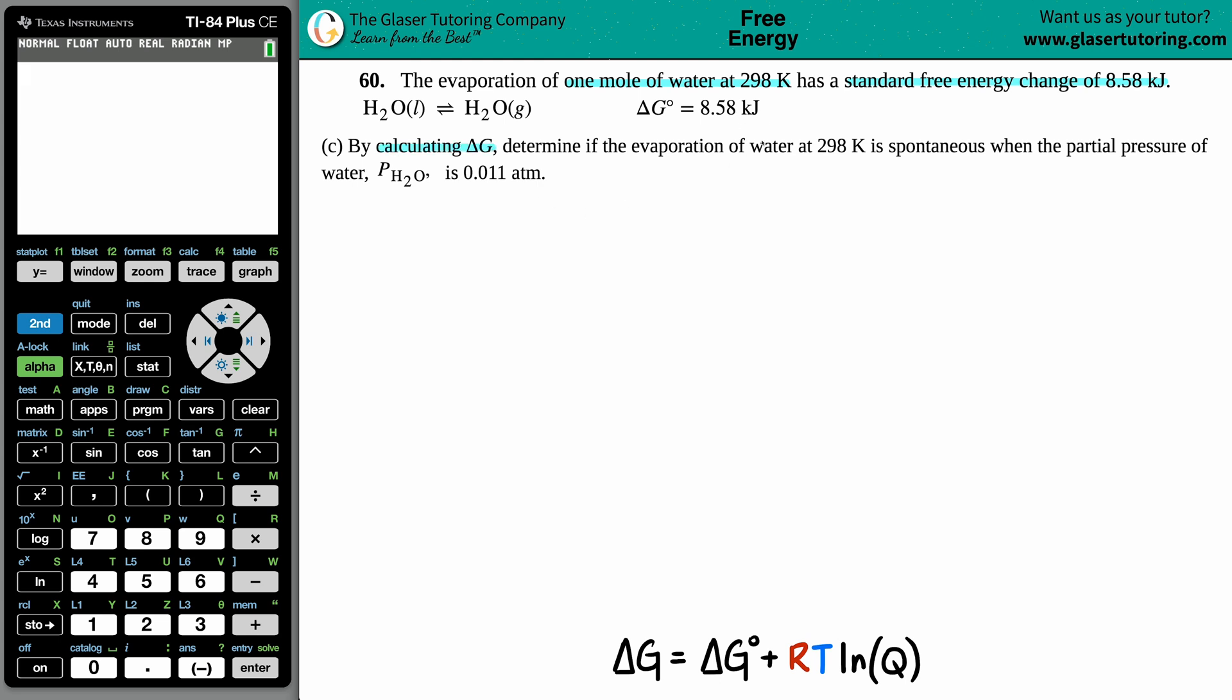Now for part C, it says calculate ΔG to determine if the evaporation of water at 298 Kelvin is spontaneous when the partial pressure of the water, pH2O, is 0.011 atm. So basically we have to calculate ΔG.